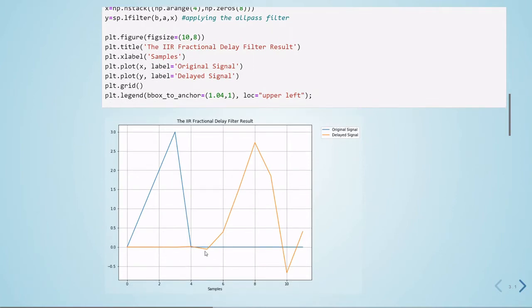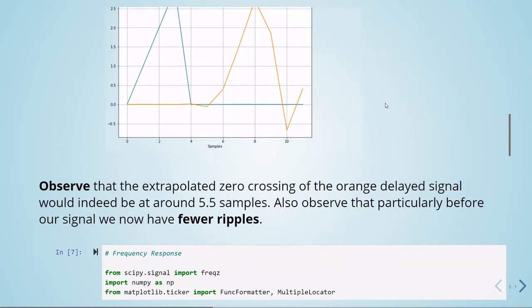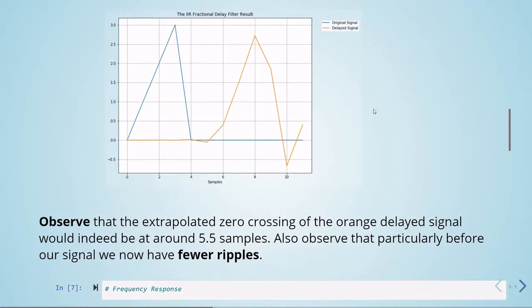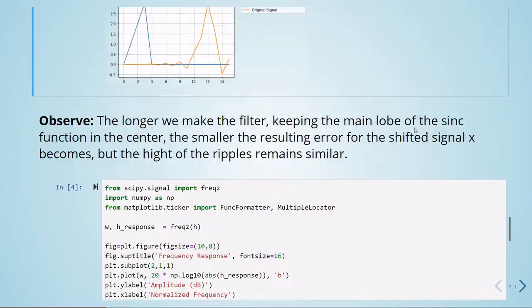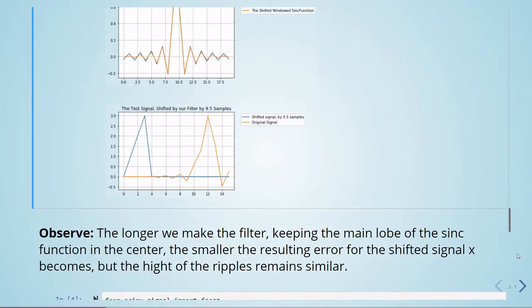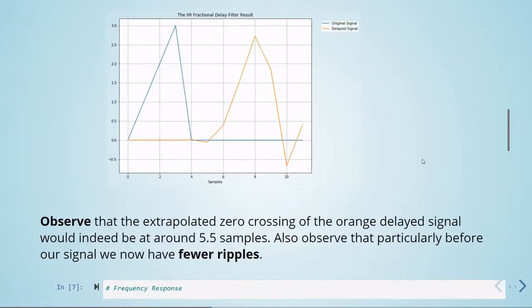which is a delay of 5.5 samples. We can see that the extrapolated zero crossing of the delayed signal would be indeed around 5.5 samples. We also see that compared to our previous attempt, we have now fewer ripples.